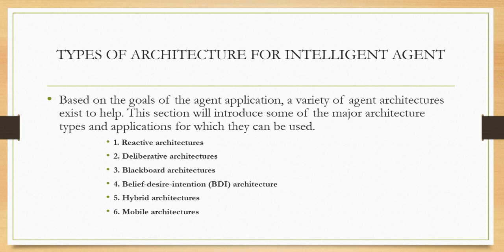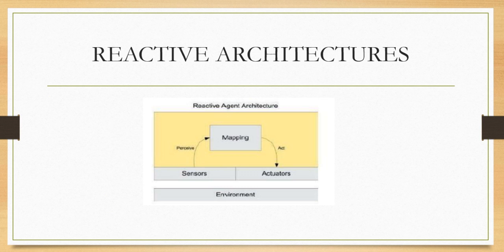There are six types of architecture that help to attain the goals of an agent application: reactive, deliberative, blackboard, BDI, hybrid, and mobile.